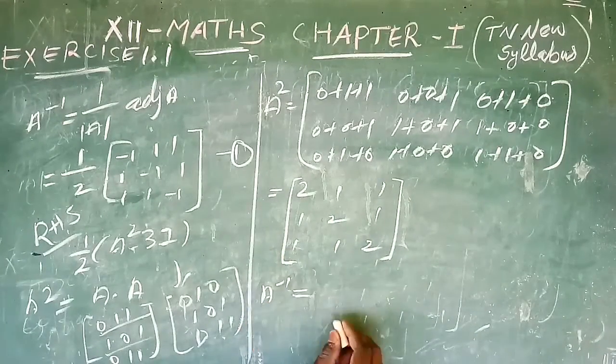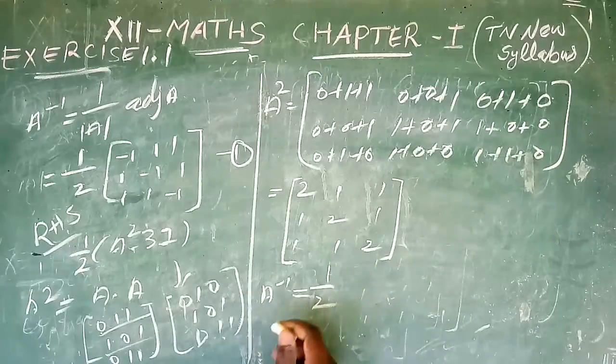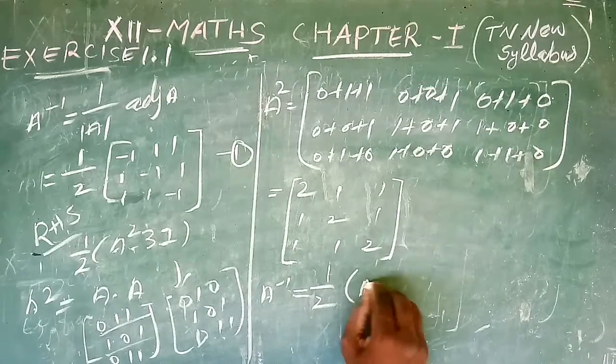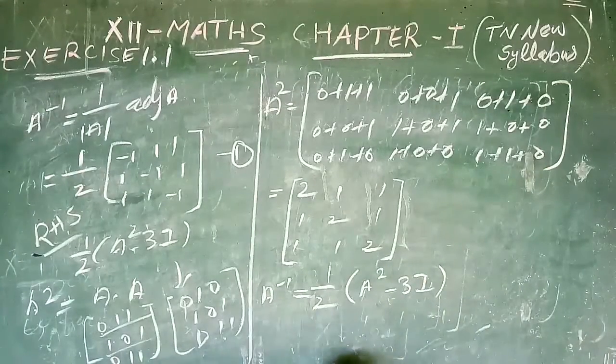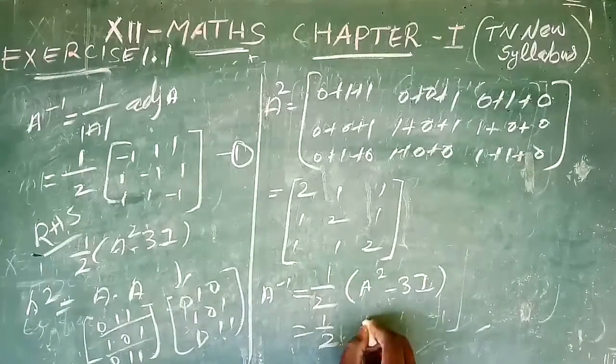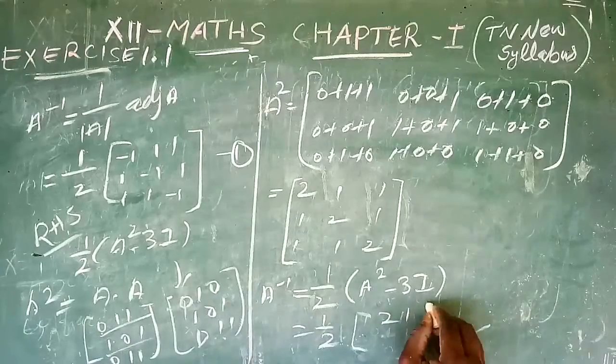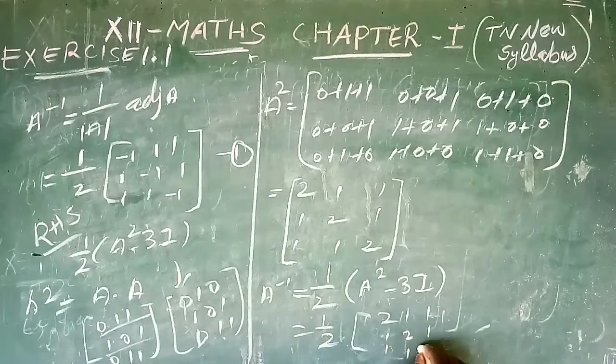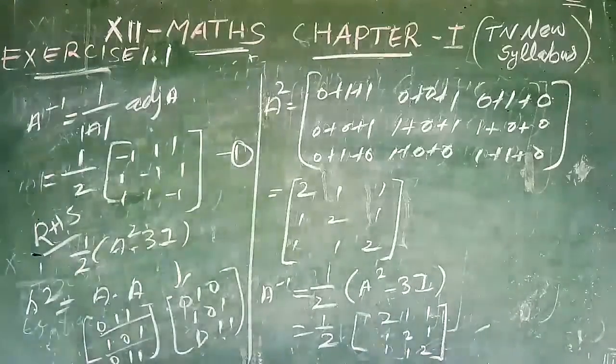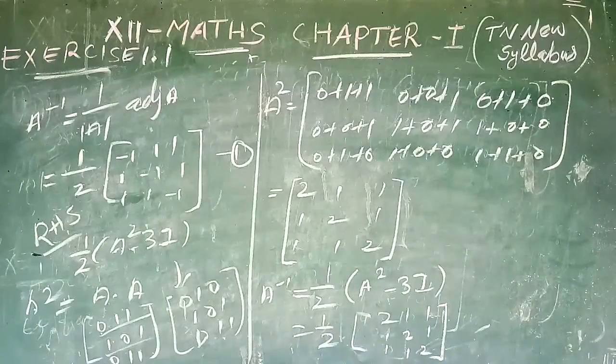Now applying the formula A inverse equals 1/2 times (A² - 3I). We substitute: 1/2 × [[2, 1, 1], [1, 2, 1], [1, 1, 2]] minus 3 times the identity matrix.